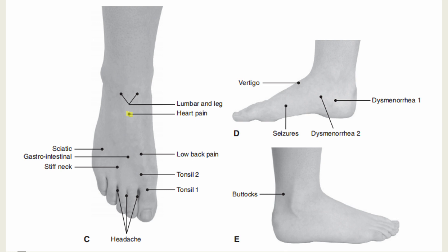The heart pain point is located 2.5 units inferior to Stomach 41 (Jiexi). Indications include chest pain, palpitations, asthma, and common colds. The lumbar and leg point is located 0.5 unit inferior to Stomach 41 (Jiexi), in the depression on either side of the tendons of the extensor digitorum longus and hallucis longus muscles. Indications include lumbar and leg pain and spasm of the lower leg.